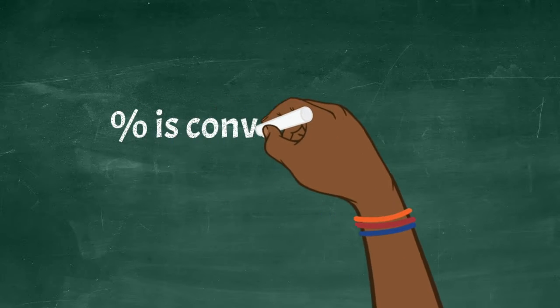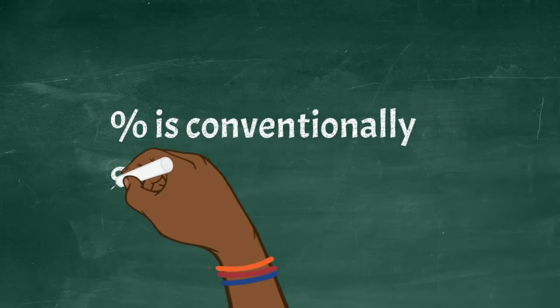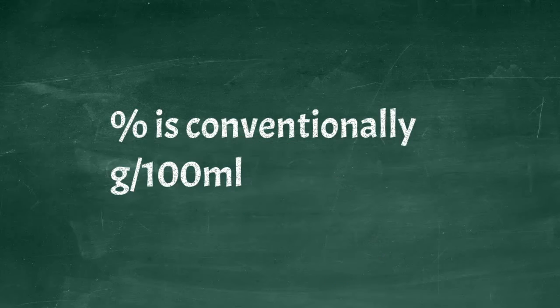Percent solutions in the lab usually are referring to a standard unit of gram per 100 milliliter. That's the convention, always gram, one gram per 100 milliliter.